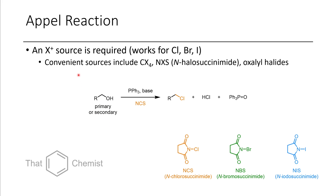The second reaction, which works for chlorides, bromides, and iodides, is called the Appel reaction. The Appel reaction uses a combination of triphenylphosphine — occasionally other phosphines are used, but triphenylphosphine is most common — various bases, and an electrophilic halogenating oxidant such as carbon tetrachloride, carbon tetrabromide, N-chlorosuccinimide, N-bromosuccinimide, N-iodosuccinimide, etc. The main reason you wouldn't want to use this reaction is that the triphenylphosphine oxide byproduct is annoying to remove practically. If you're just doing chemistry on paper it's great, but in reality it can be a nuisance — though there are methods to remove these impurities.